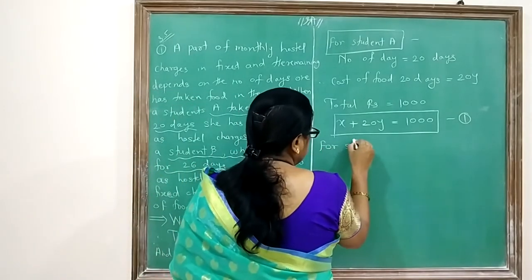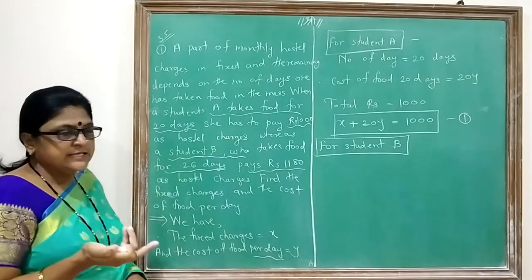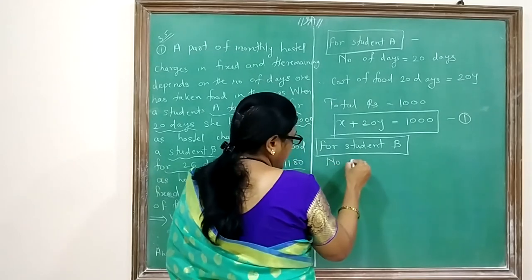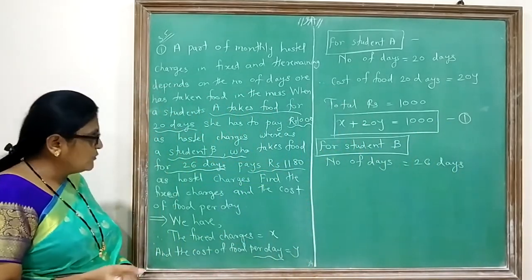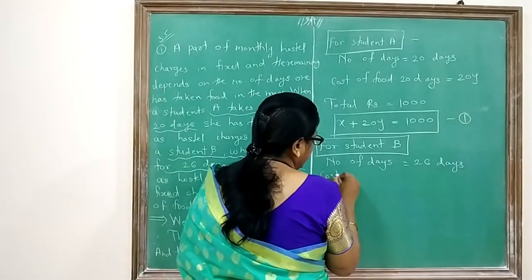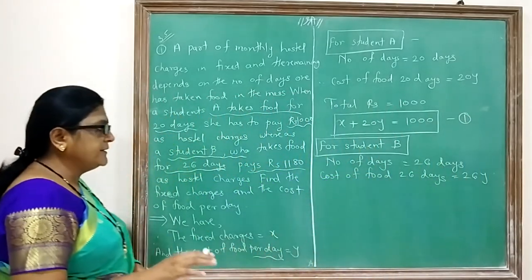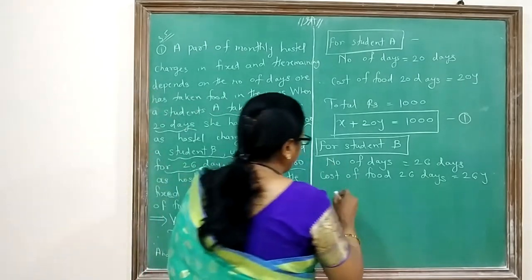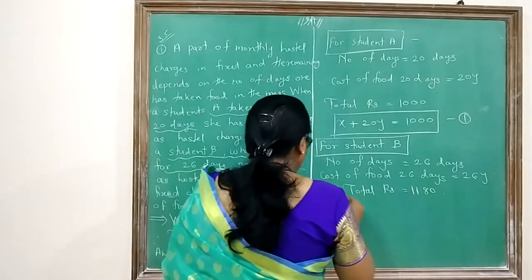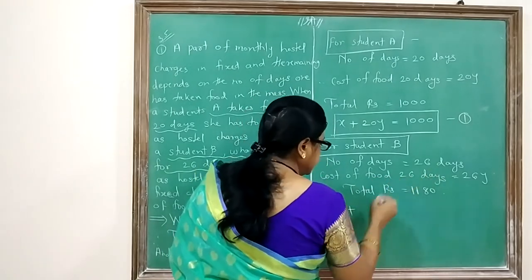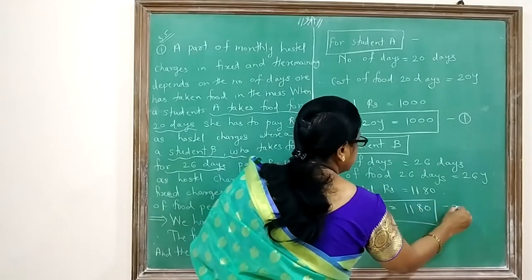For student B: number of days = 26. Cost of food for 26 days = 26Y. Total rupees paid = ₹1180. So the equation is: fixed charge X plus 26Y equals 1180, giving X + 26Y = 1180. This is your second equation.